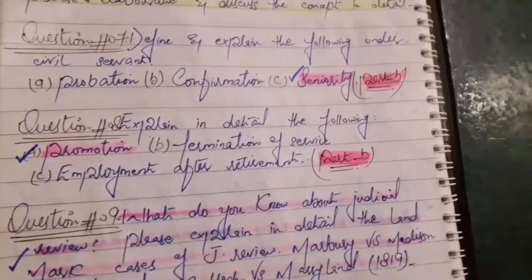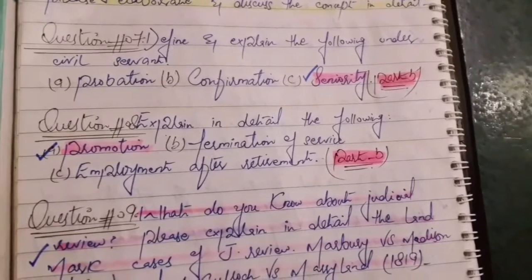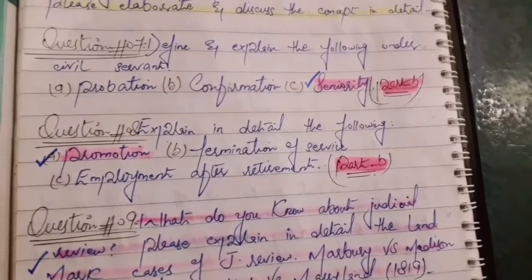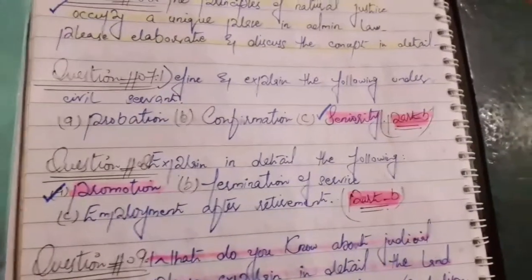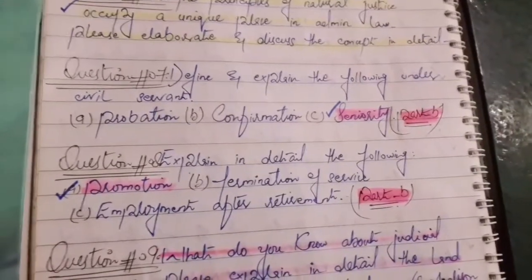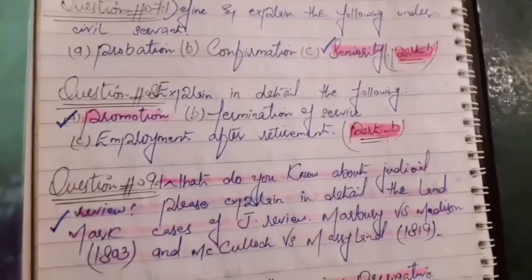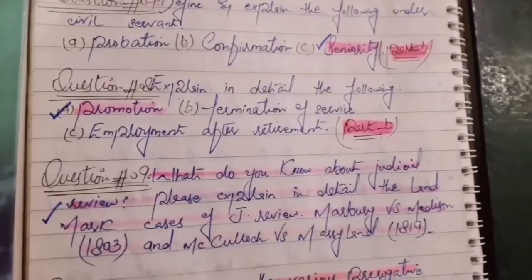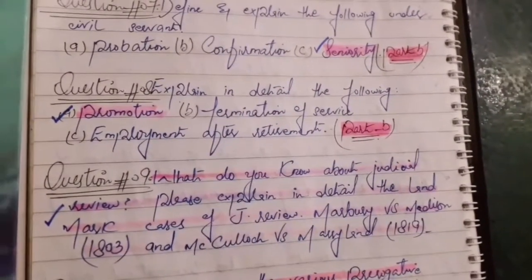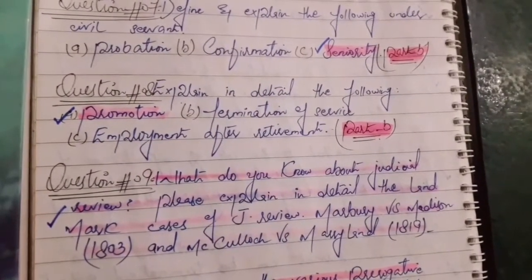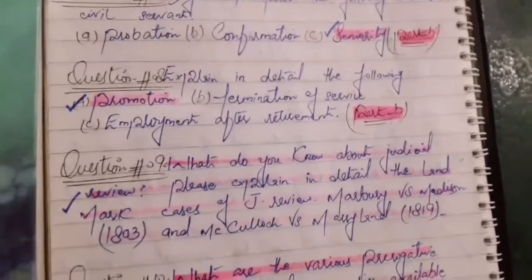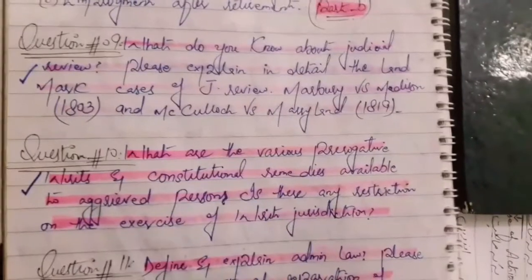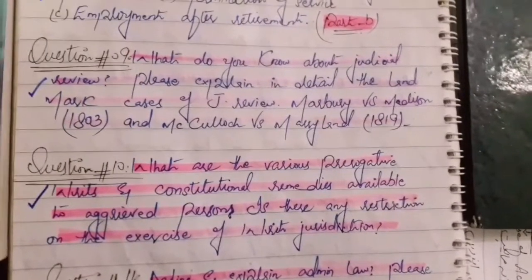Question number seven: Define and explain the following under the Civil Servants Act - probation, confirmation, and seniority. Question number eight: Explain in detail the following - promotion, termination of service, and employment after retirement. Question number nine: What do you know about Judicial Review?